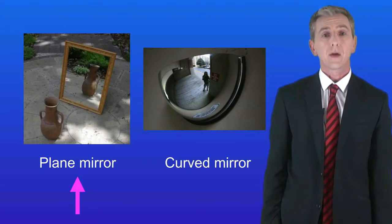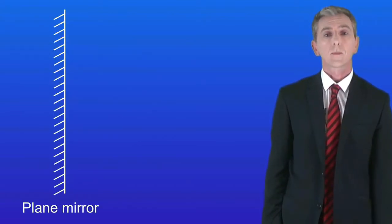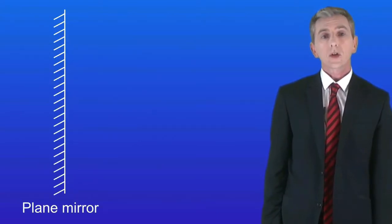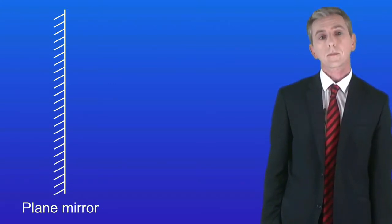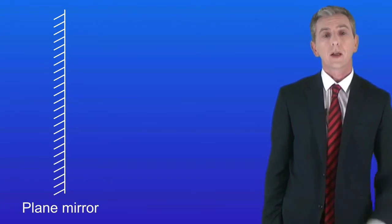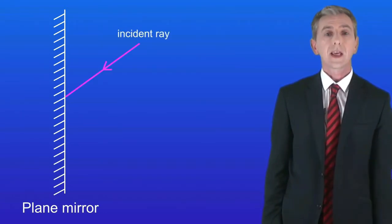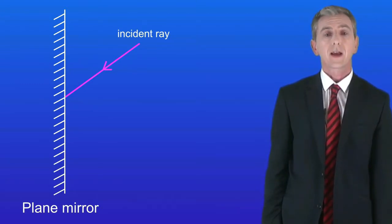In physics we represent a plane mirror in a specific way, and you could see this in your exams. Let's start off by looking at how light is reflected — these rules always apply. Imagine a ray of light hitting the mirror. We call this the incident ray, and we're going to work out how this ray of light is reflected.